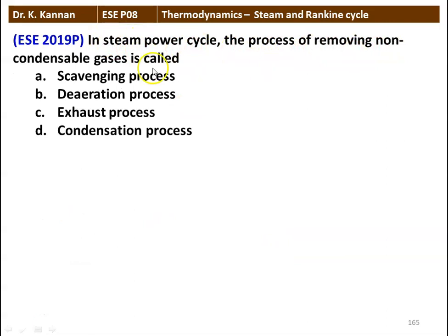In a steam power cycle, the process of removing non-condensable gases is called: A: scavenging process, B: de-aeration process, C: exhaust process, D: condensation process. The correct answer is de-aeration process. In the condenser, we are doing the de-aeration process. The condenser operates at lower pressure — that is, vacuum pressure, lower than atmospheric pressure — so there is a possibility of atmospheric air leaking into the condenser. The presence of air inside the condenser will reduce the efficiency of the condenser, so we have to periodically remove the air. This process is called de-aeration and is done by a vacuum pump normally attached to the condenser.